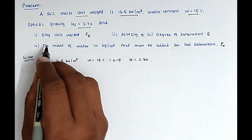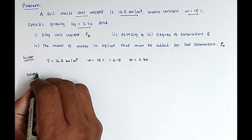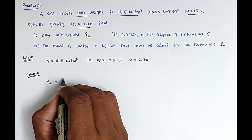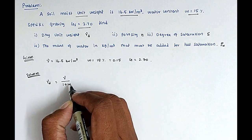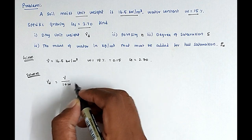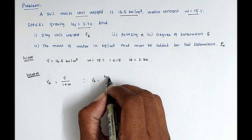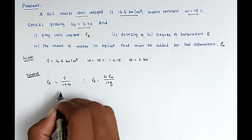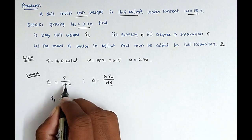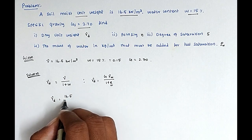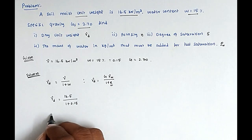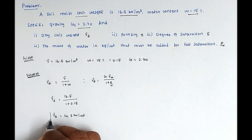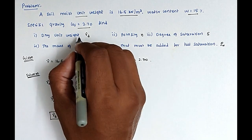So we have to find out first the γD value. The formula for γD equals γ divided by (1 + W). So now γD equals 16.5 divided by (1 + 0.15), and from that we got the value of γD equal to 14.3 kN/m³. This is the answer for the first question.